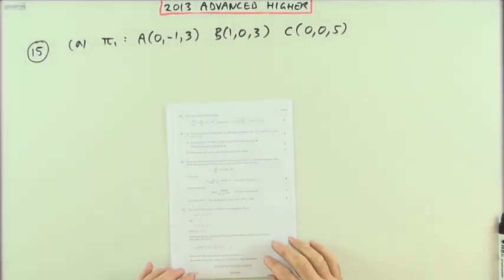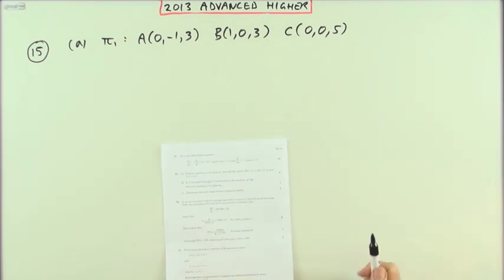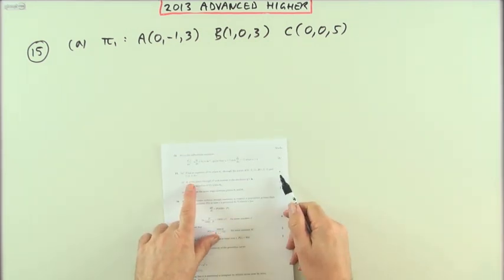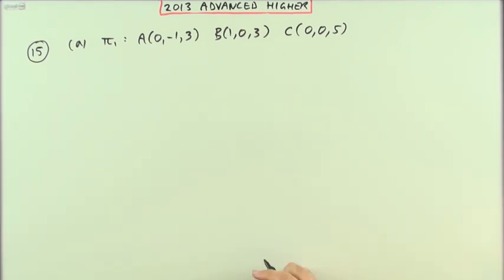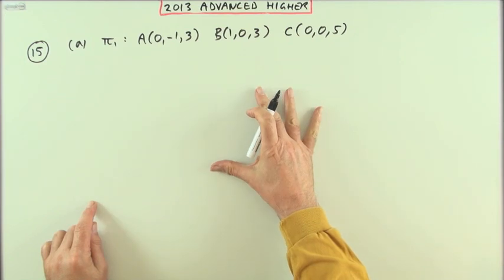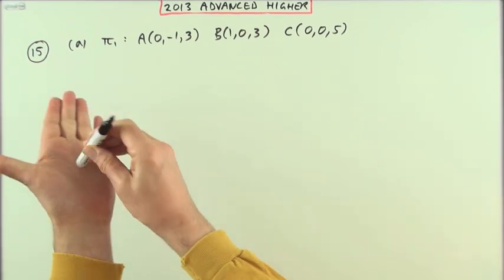Number 15 from the 2013 Advanced Higher exam. This is a three-dimensional geometry, three-dimensional vectors question. First part for four marks: get the equation of a plane given three points. That should be straightforward because to get the equation of a plane you need a point on it and the normal vector to it—that's enough to specify it completely.